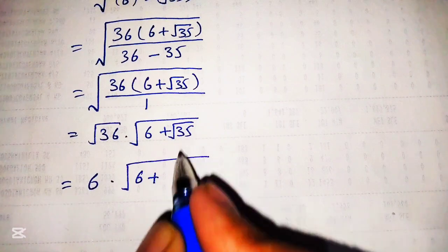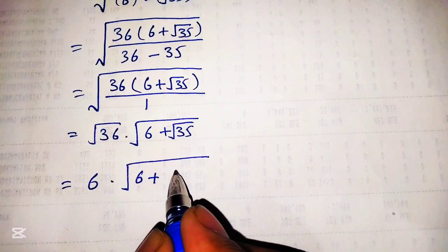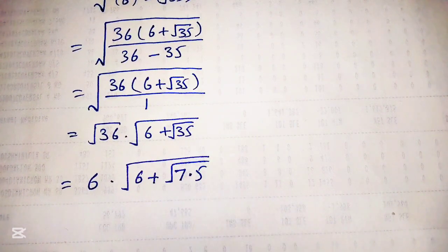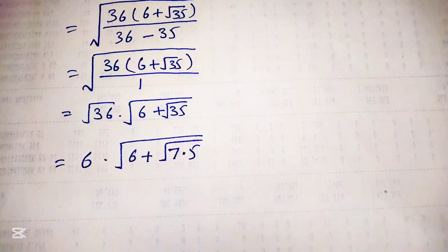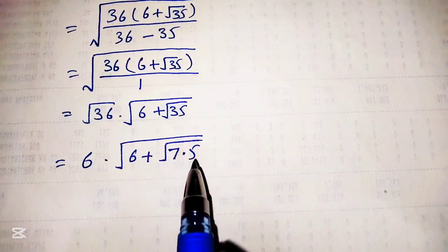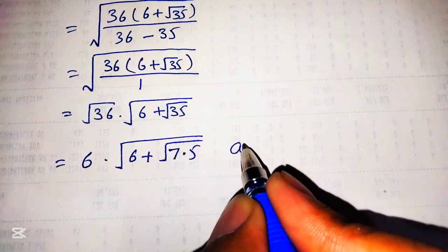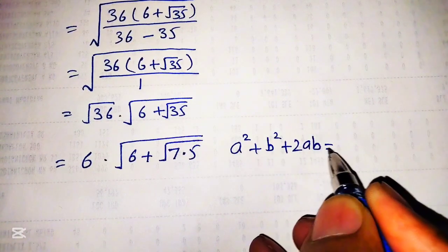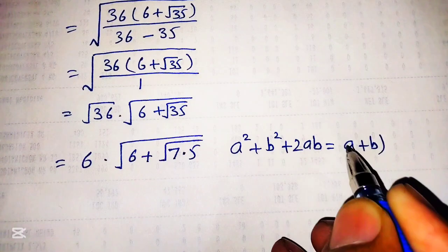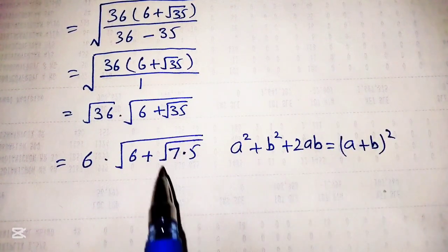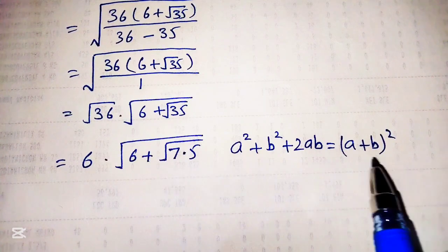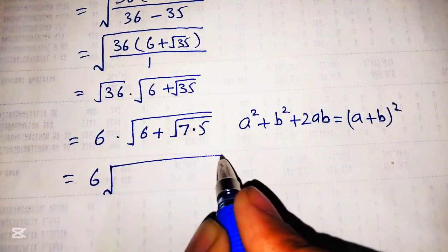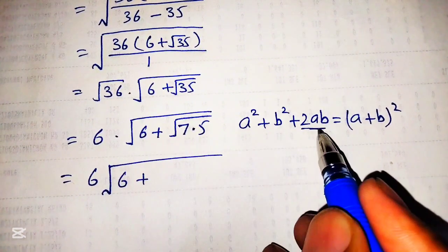We use a trick here: 6 plus square root of 35 can be written as 7 times 5 equals 35 under the square root. To solve this, we will convert the term inside the square root into the perfect square formula: a squared plus b squared plus 2ab equals a plus b whole squared. To convert this term inside the square root into this formula, we rewrite it as 6 times square root of 6 plus, and first we will make this term into 2ab.